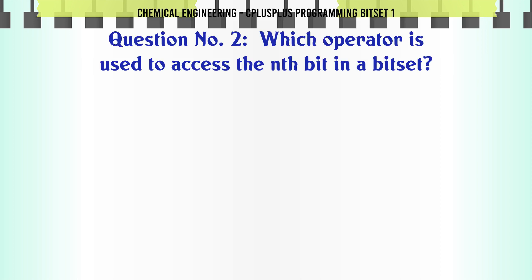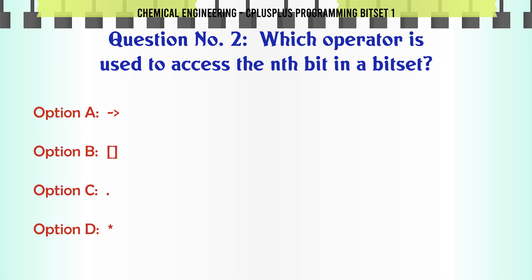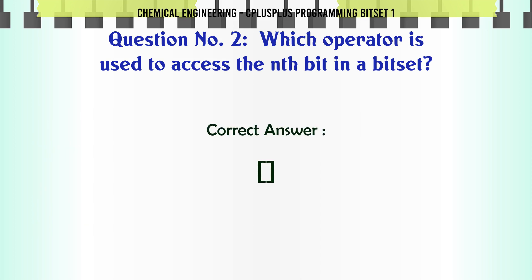Which operator is used to access the nth bit in a bitset? A. B. C. D. The correct answer is [].